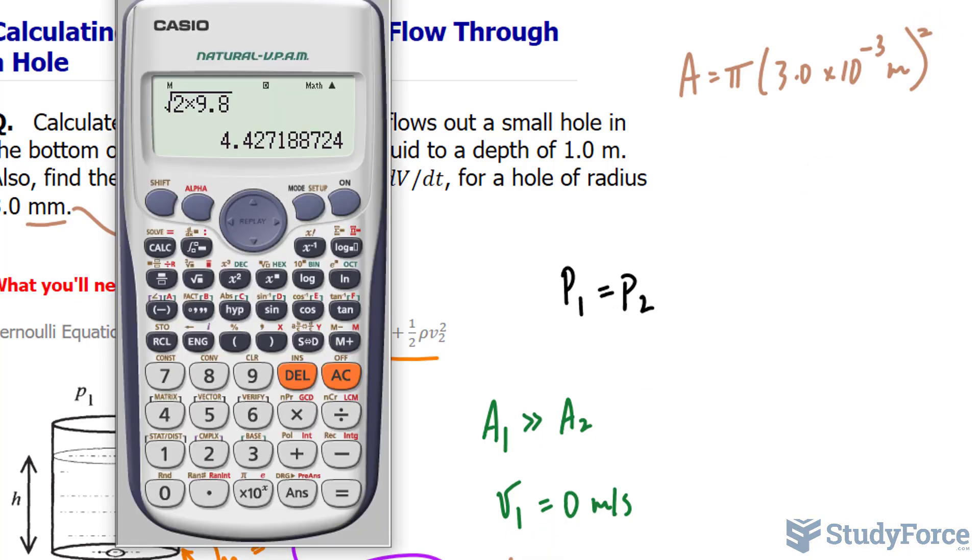So we'll find the area, then multiply it by the speed in which we found earlier. Let's not get ahead of ourselves. Let's find the area first.